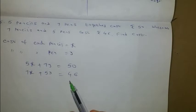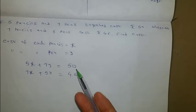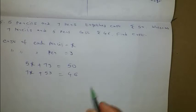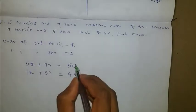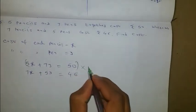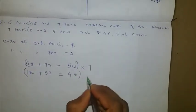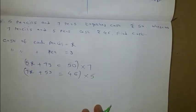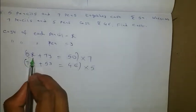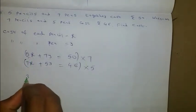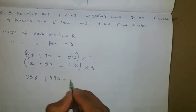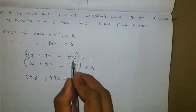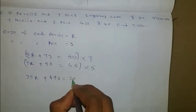Using the elimination method, I will multiply the first equation by 7 and the second equation by 5. This gives 35x plus 49y equals 350, and 35x plus 25y equals 230.